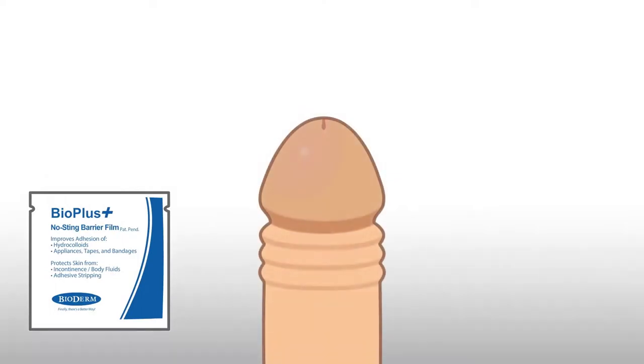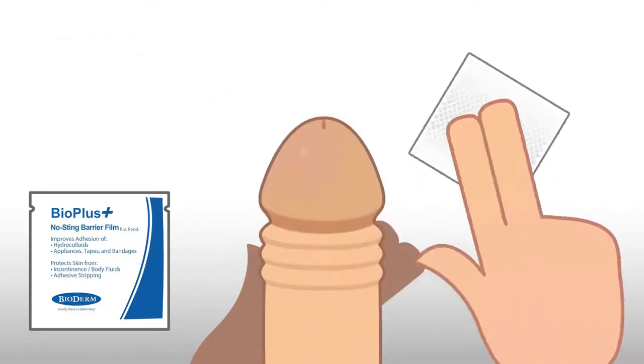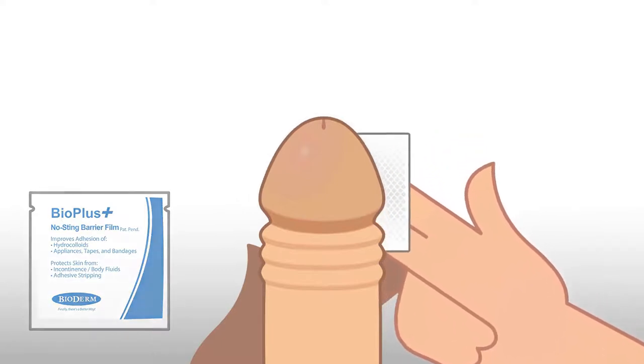Open the BioPlus packet and remove the wipe. Hold your penis with your left hand and wipe the BioPlus around the tip of your penis. Make sure you wipe the V-shaped groove on the underside of the head of your penis. Let the BioPlus dry until it's no longer sticky.